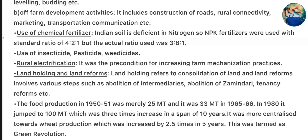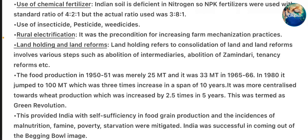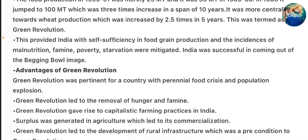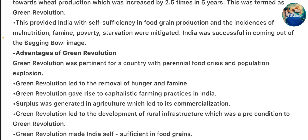The food production in 1950-51 was merely 25 million tons and it was 33 million tons in 1965-66. In 1980, it jumped to 100 million tons, which was 3 times increased in the span of 10 years. It was more centralized towards wheat production, which was increased by 2.5 times in 5 years. This was termed as the Green Revolution. This provided India with self-sufficiency in food grain production and the incidence of malnutrition, famine, poverty, and starvation were mitigated. India was successful in coming out of the 'ship to mouth' image.